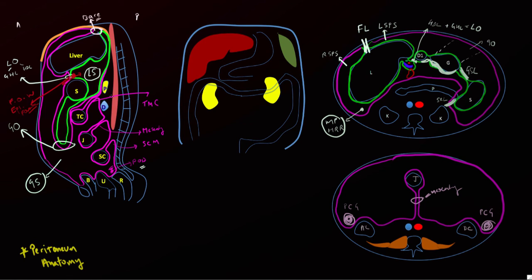On the left side, the paracolic gutter largely communicates with the left subphrenic space, though a ligament forms an incomplete barrier. Now, in the coronal plane, the transverse mesocolon is used to delineate different components of the peritoneal cavity. It splits the peritoneal cavity into the supramescolic space above it and the inframesocolic space below it.